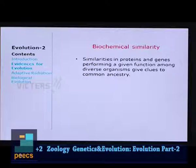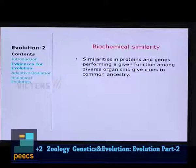There are also similarities in chemical molecules — similarities in proteins and genes performing a given function among diverse organisms point to common ancestry. From bacteria to human beings, the structure of genes and DNA is essentially the same. All are formed with the same molecules, and the protein for gene synthesis in a bacterium is the same as in a human being. This also shows common ancestry.